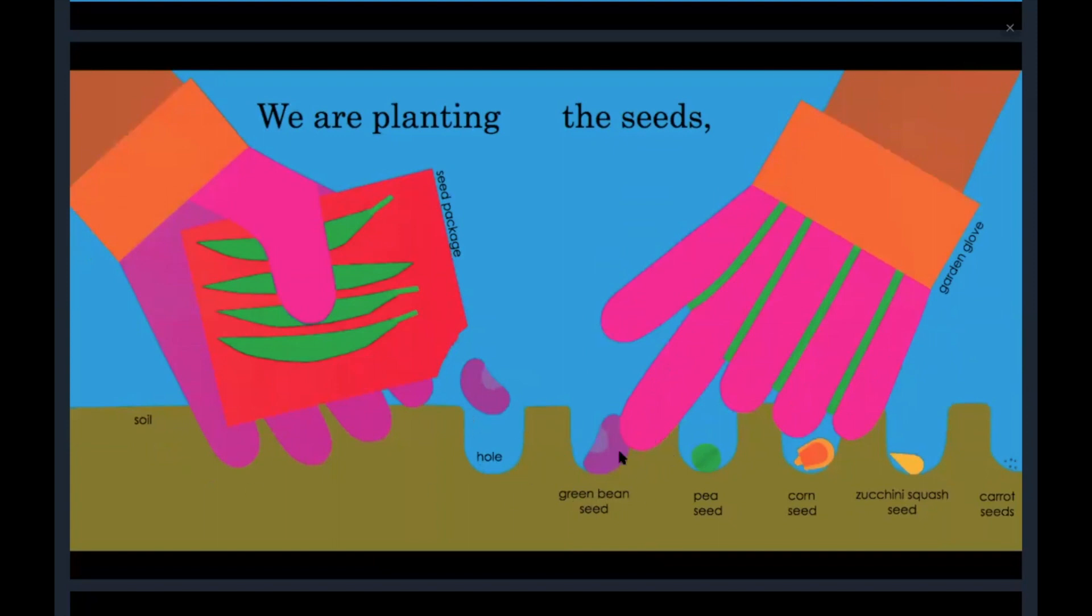So they're planting a green bean seed, a pea seed, a corn seed, zucchini squash seeds, and oh look, even little carrot seeds like our book from last week.